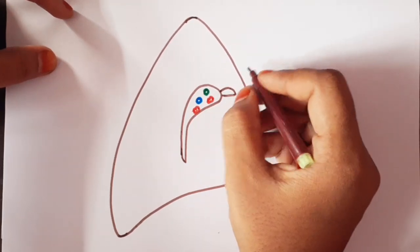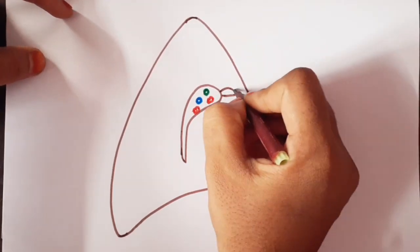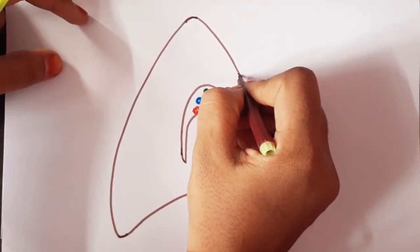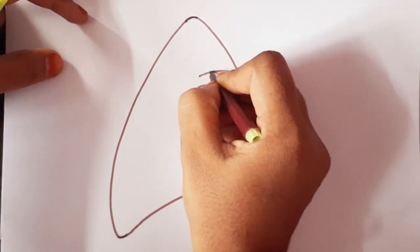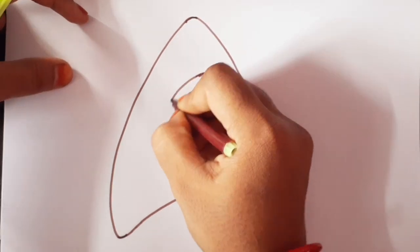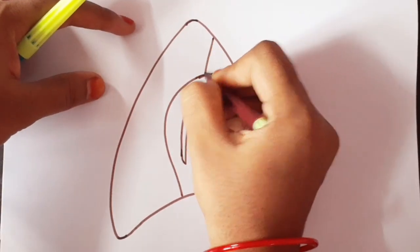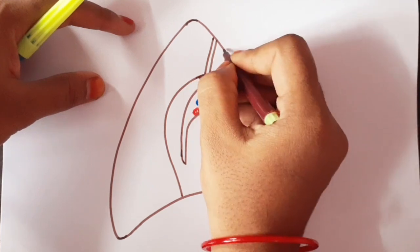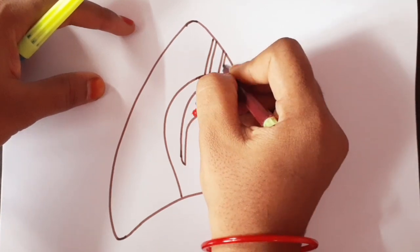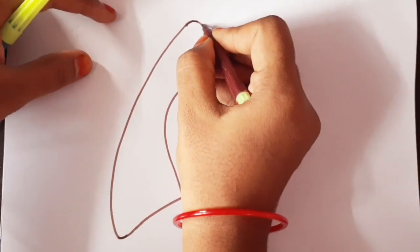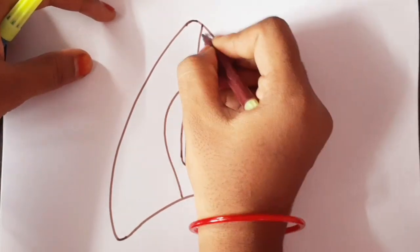This is the pulmonary trunk. This is the arch of aorta with the descending thoracic aorta. These two are the left subclavian and left common carotid vessels.